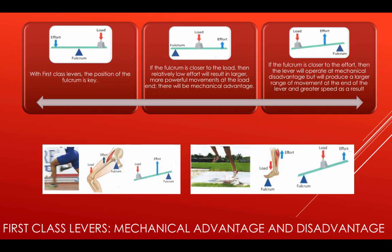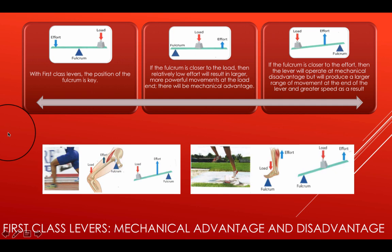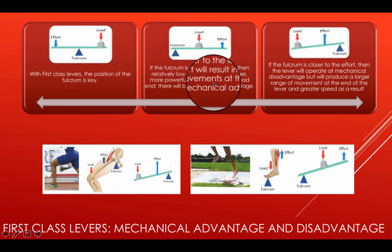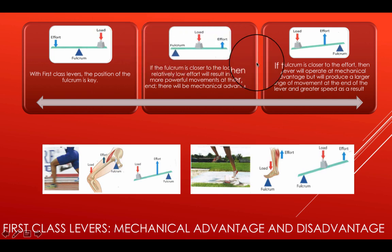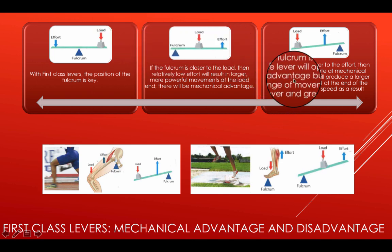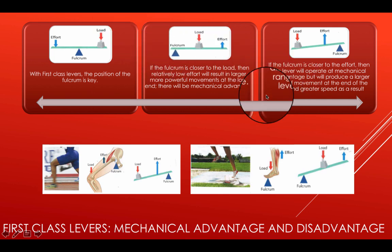For mechanical advantage and disadvantage in a first class lever, the position of the fulcrum is key. If the fulcrum is closer to the load, then relatively low effort will result in a larger, more powerful movement at the load end — there will be a mechanical advantage. If the fulcrum is closer to the effort, then the lever will operate at a mechanical disadvantage, but will produce a larger range of movement at the end as a result.